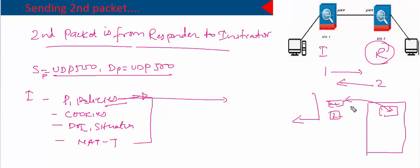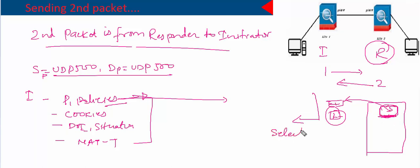It picks up the first one and matches it with its own configured policy. If it matches, it stops there and sends that policy back. If it does not match, it picks up the next one and compares it with the configured policy, and so on. So it compares the phase one policies sent with the policy configured on itself, and if a match is found, it selects only that matched policy to use.